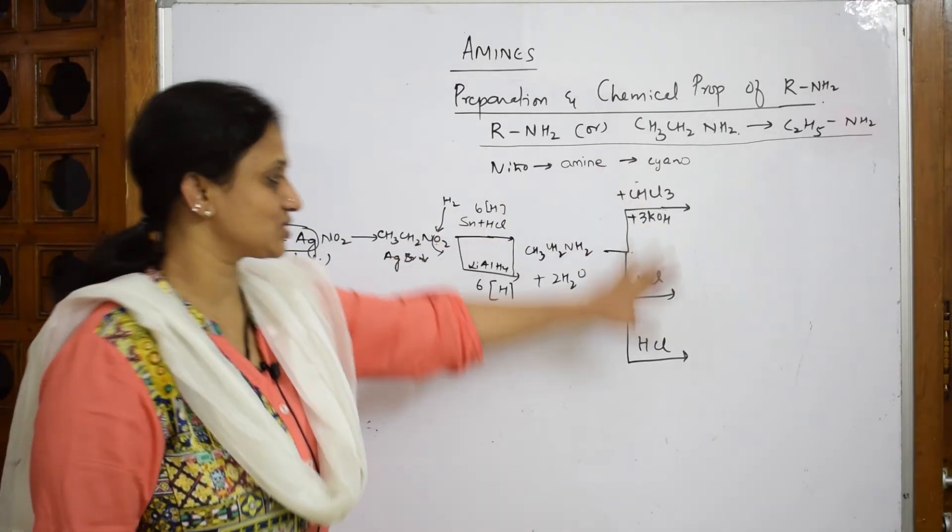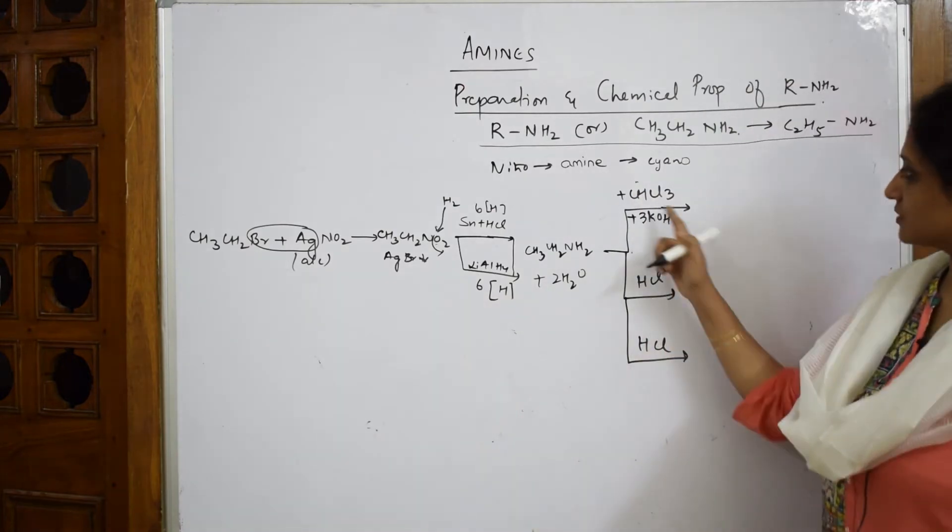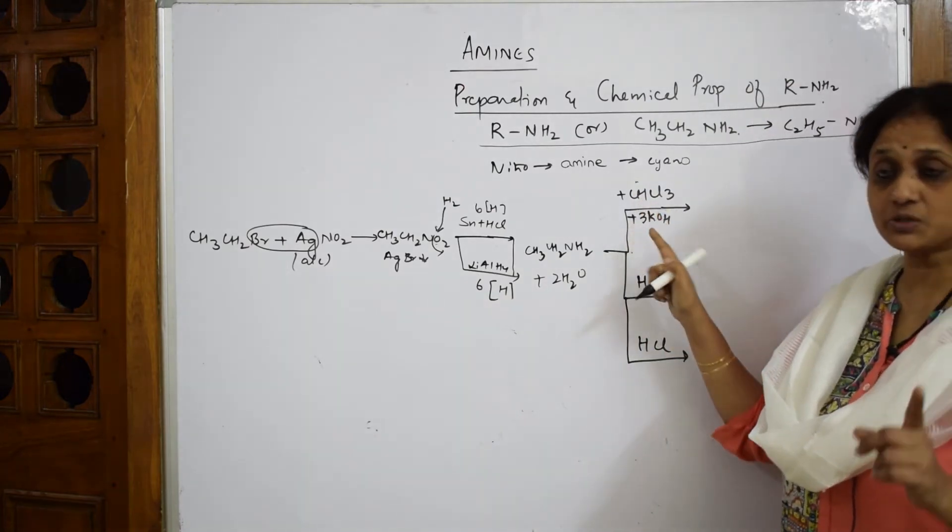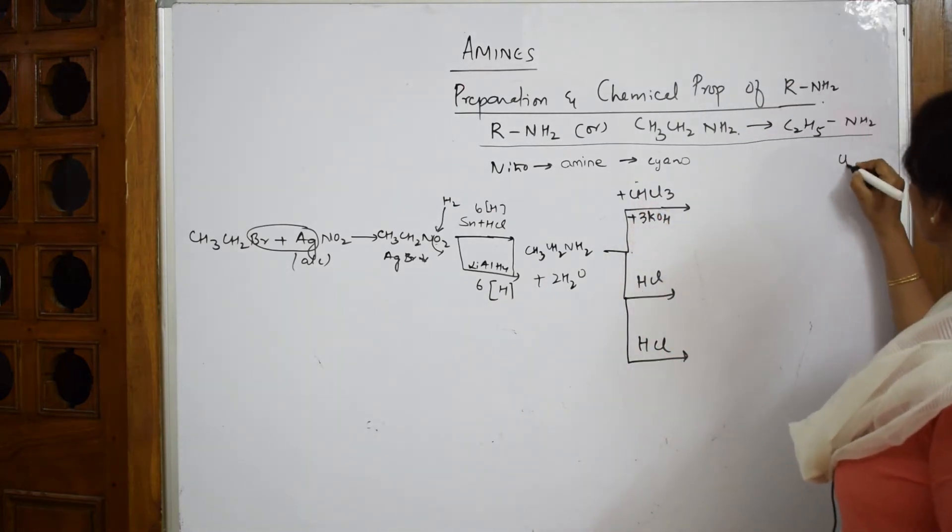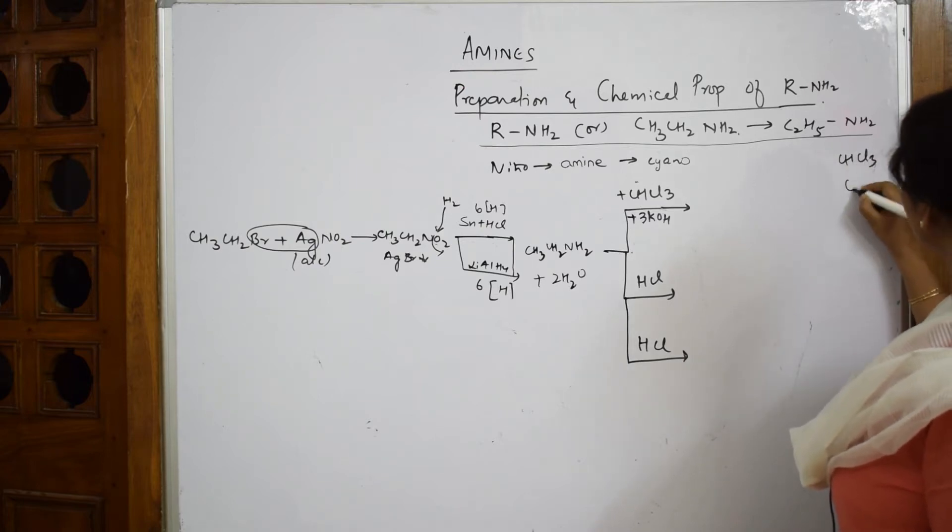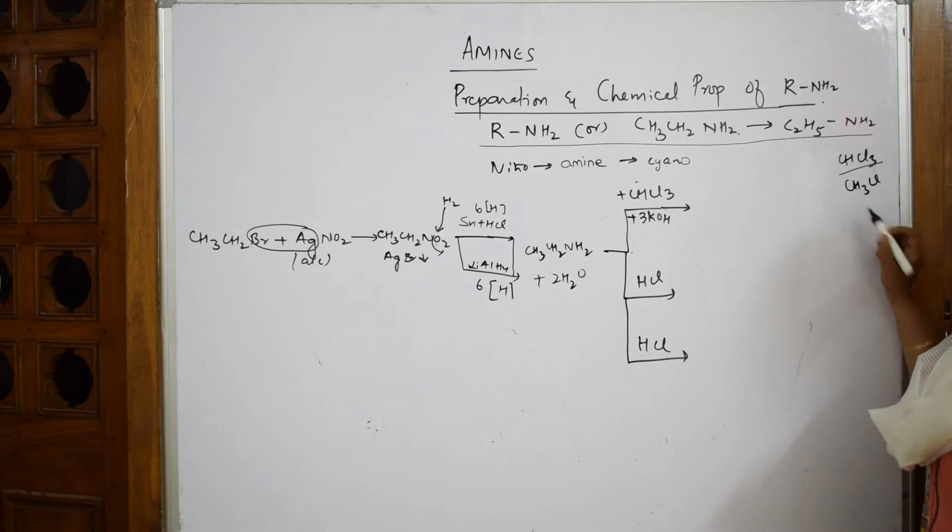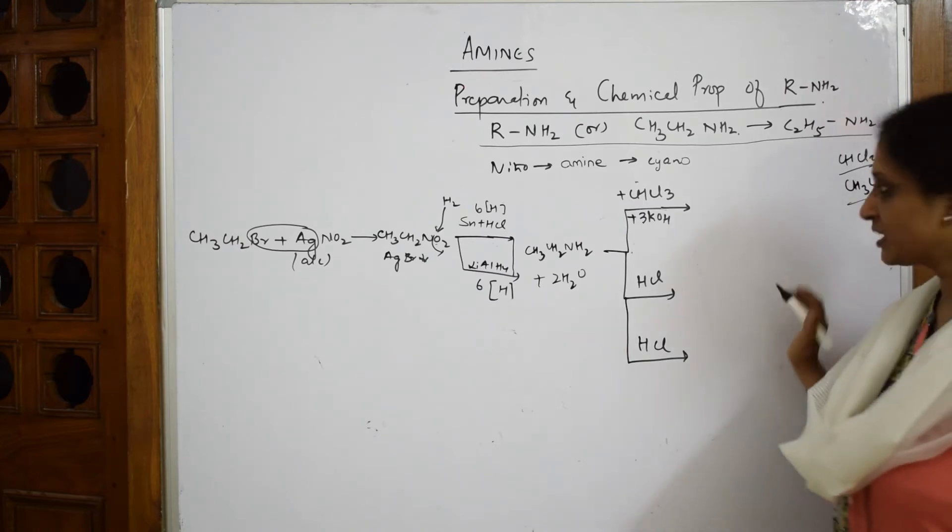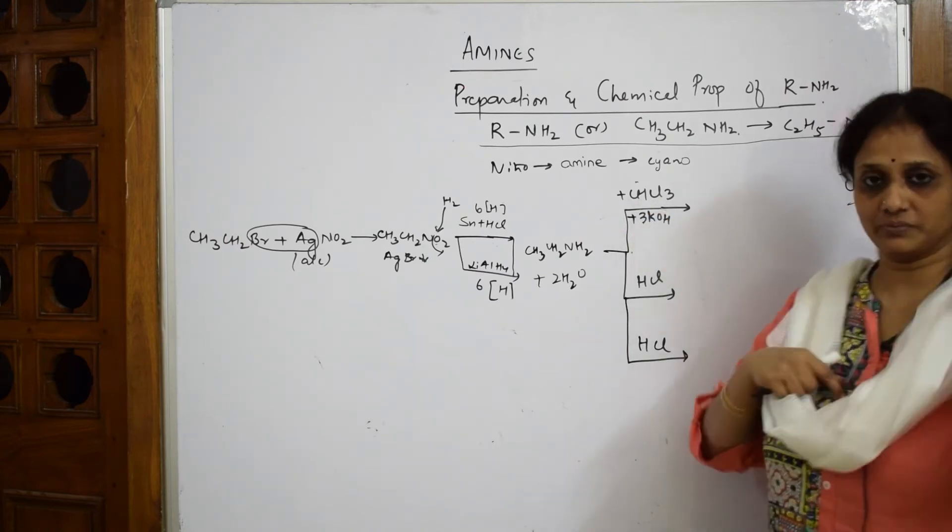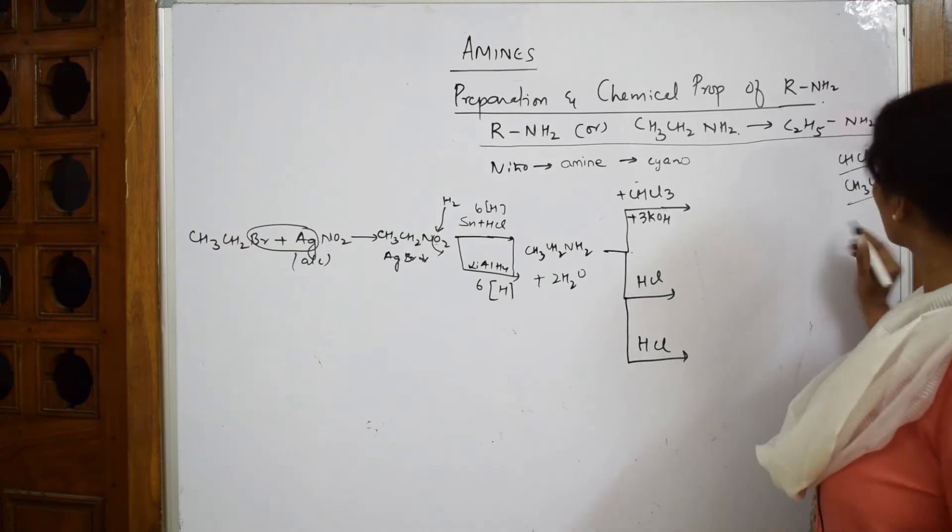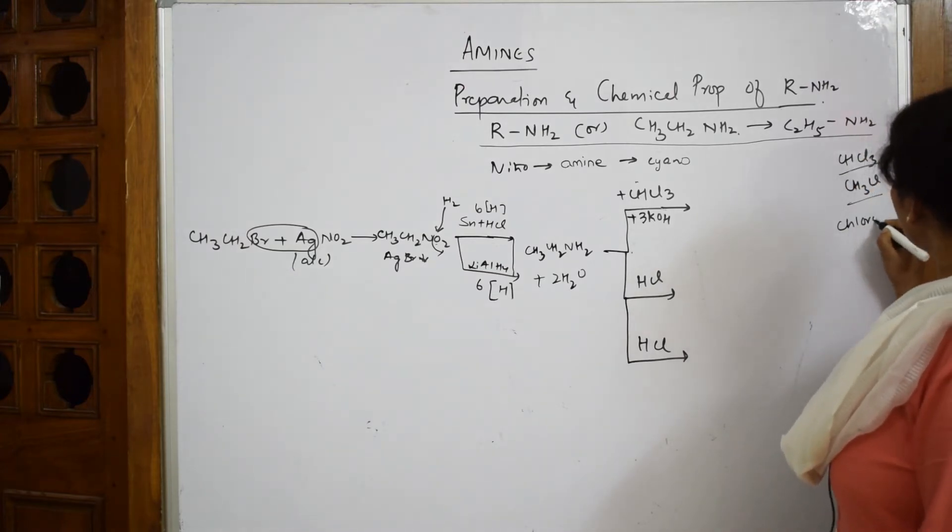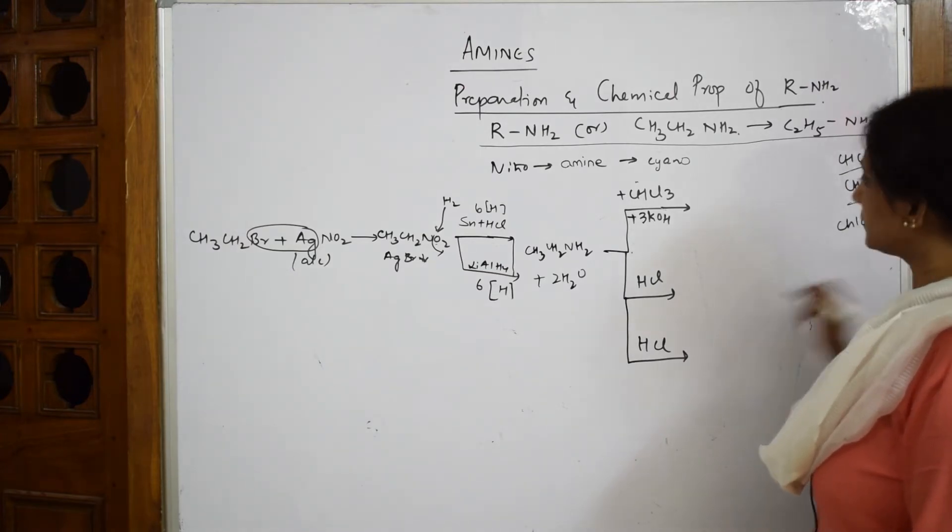Now to this ethylamine, if in the exam they give you such reactions, see how simple this is: your chloroform. There's a difference between CHCl3 and CH3Cl - lot of difference. This is chloroform, this is methyl chloride. Now, chloroform is CHCl3.